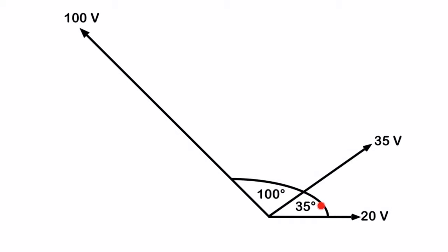I've got a 35 degree angle in here, so this will be 35 volts at 35 degrees, and then beyond that I have 100 degrees, so I'm going to add that 100 to the 35, so I'm going to say I've got 100 volts at 135 degrees.